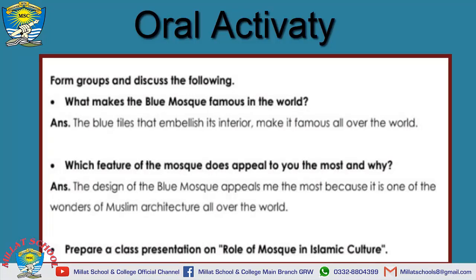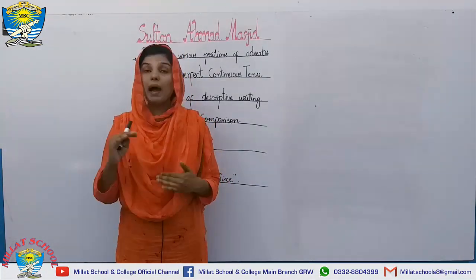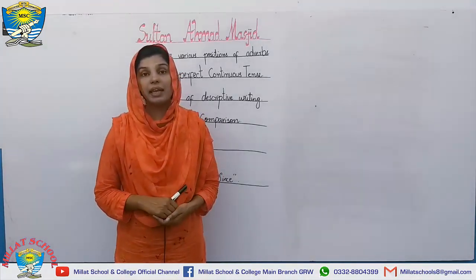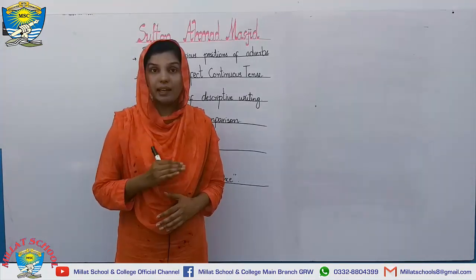The first question in the oral activity group discussion is: What makes the Blue Mosque famous in the world? The blue tiles that embellish its interior make it famous all over the world. Which feature of the mosque appeals to you the most and why? The design of the Blue Mosque appeals me the most because it is one of the wonders of Muslim architecture all over the world. Next, prepare a class presentation on the role of the mosque in Islamic culture, taking help from the previous lecture on the architecture and the love of Muslim rulers for mosques.